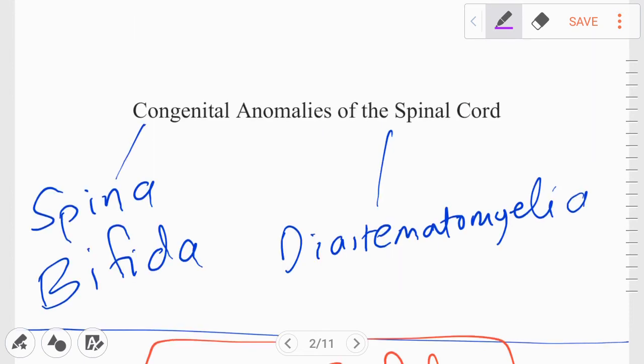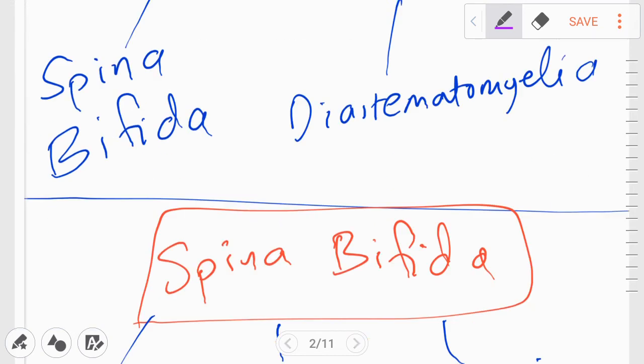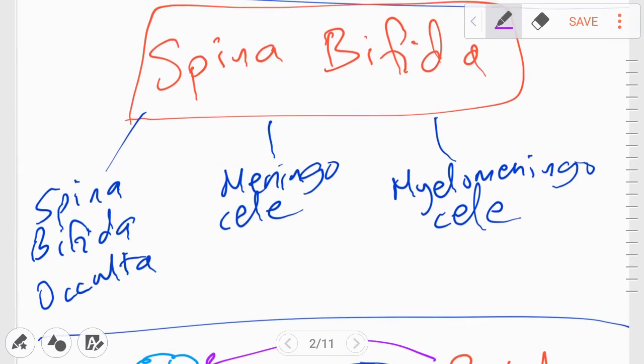Once we understand that, we can then move on to the congenital anomalies of the spinal cord. We're going to divide the congenital anomalies of the spinal cord into two parts, spina bifida and diastematomyelia. So let's start our discussion by talking about spina bifida.